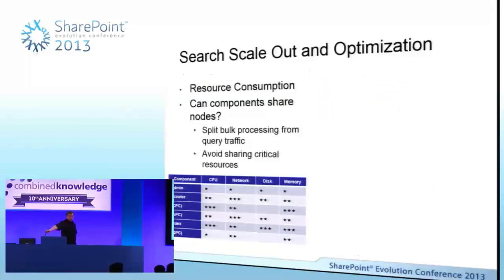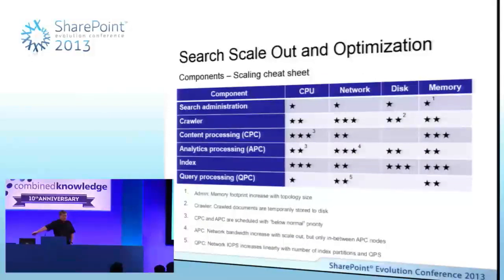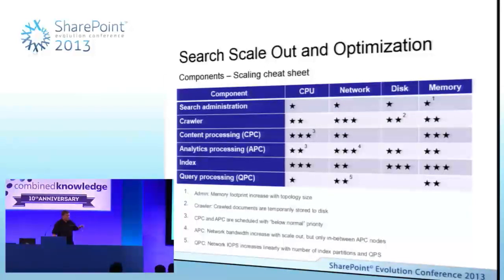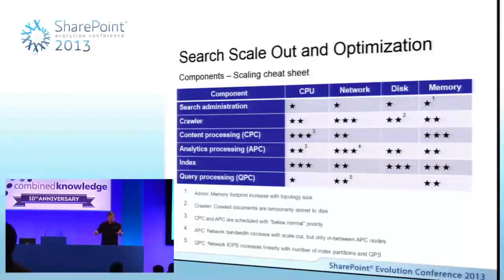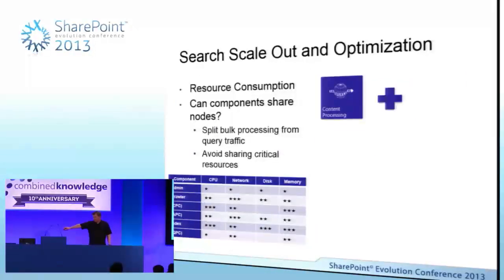Three stars means it's a heavy consumer of that resource — don't have another three-star consumer alongside it. In the ideal world, every search component would be on its own separate server, but that's completely unrealistic — most people don't have that much money. So realistically think about where you can compromise: where can I share my resources? In 2010 we shared lots of things; in 2007 we shared everything. Content processor and analytics processor — three and two — not ideal but acceptable. This is by no means prescriptive; it's generally whatever works for you. You might be crawling infrequently so you can share crawl components with query processors.